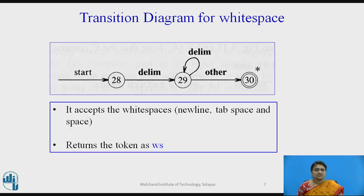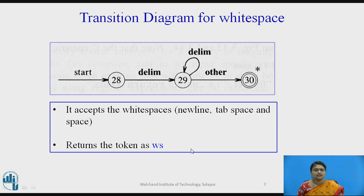This transition diagram is for whitespace — whitespace means extra lines, number of lines, tab spaces, or simple spaces — and it returns ws.